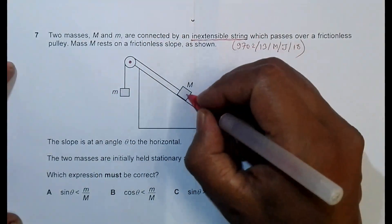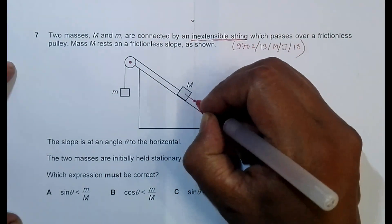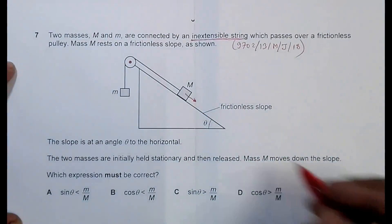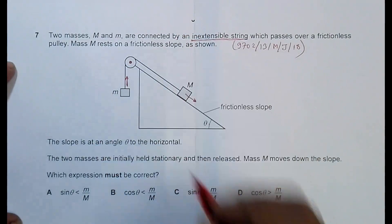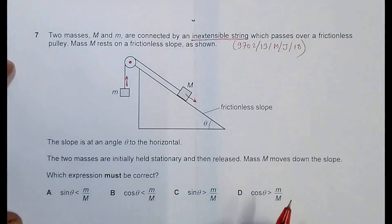it is found that mass M, so this mass M moves downward. So if it moves downwards, then mass m should be moving upward. So if so, which expression must be correct?